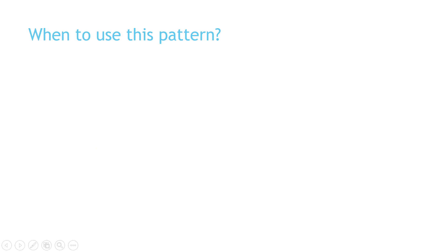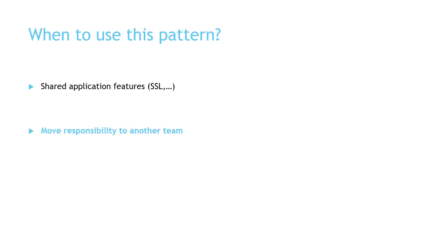Now let's see when you should use this pattern. Use it when you have shared or common application features like SSL or encryption, or when you want to move responsibility to another team — such as a security team or networking team — by offloading certain features from your services to other Azure services, allowing those teams to be responsible for the offloaded service.